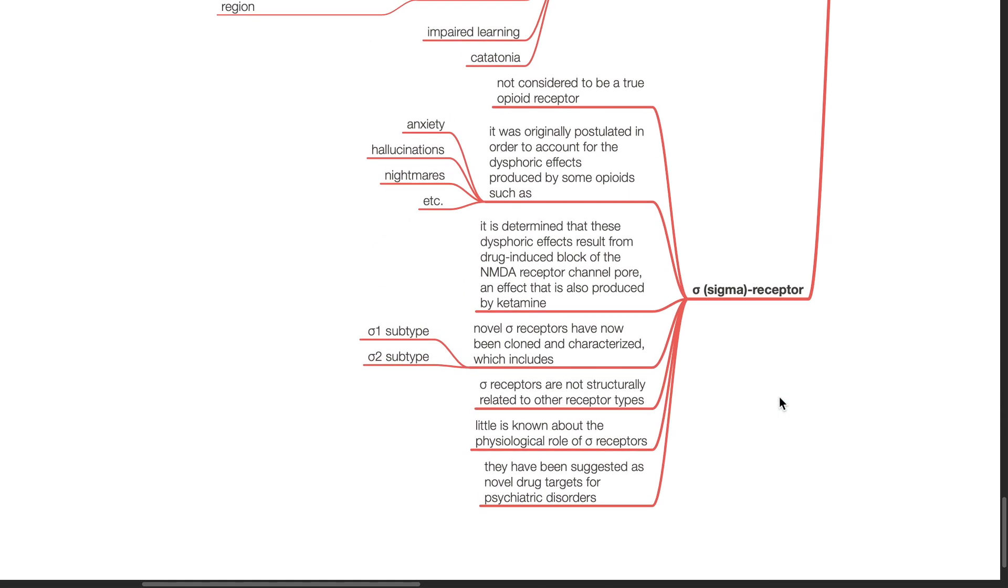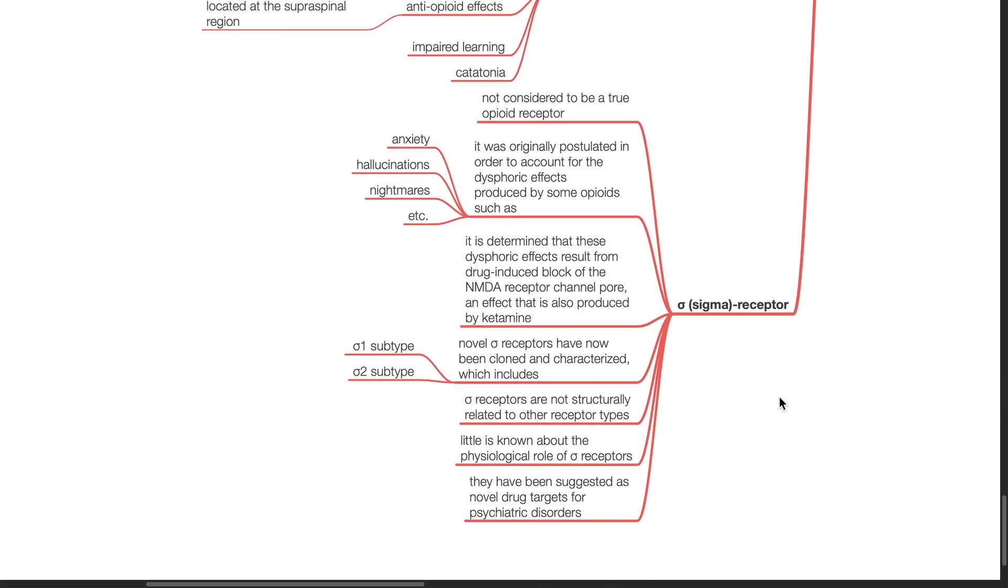SIGMA receptor is not considered to be a true opioid receptor. It was originally postulated in order to account for the dysphoric effects produced by some opioids, such as anxiety, hallucinations, and nightmares. It is determined that these dysphoric effects result from drug-induced block of the NMDA receptor channel pore, an effect that is also produced by ketamine. Novel SIGMA receptors have now been cloned and characterized, which includes the SIGMA1 and SIGMA2 subtype. SIGMA receptors are not structurally related to other receptor types. Little is known about the physiological role of SIGMA receptors. They have been suggested as novel drug targets for psychiatric disorders.